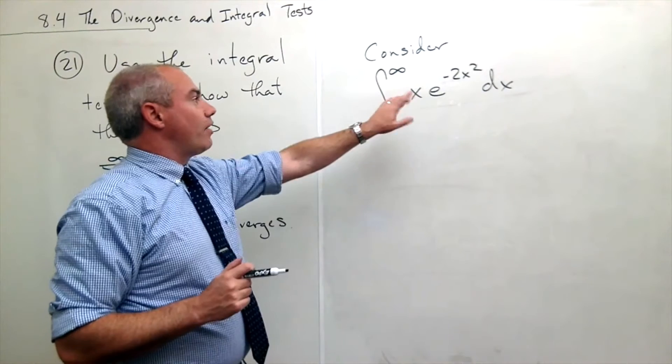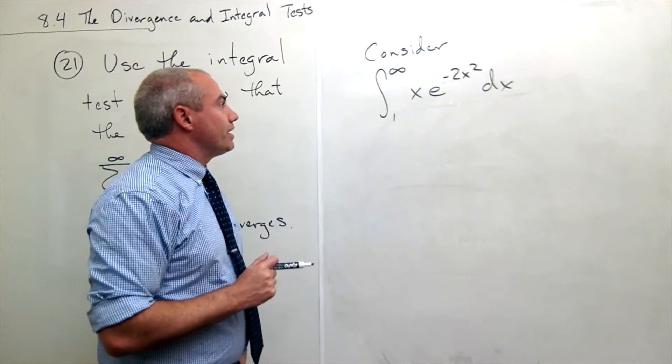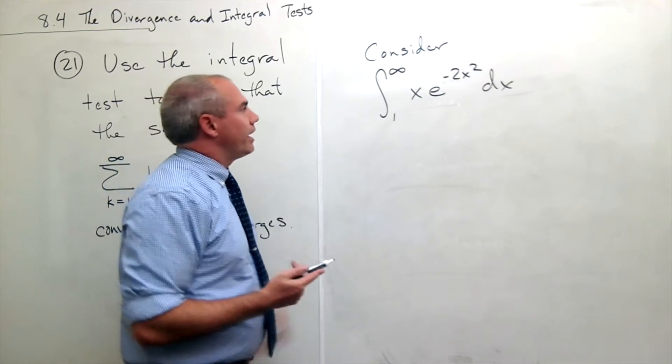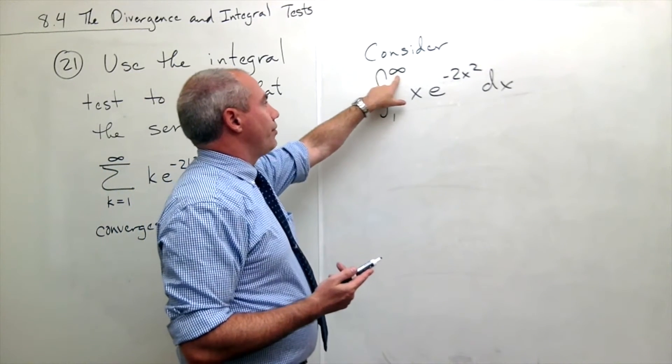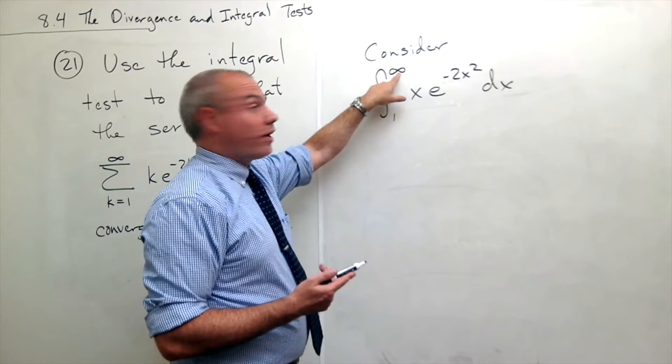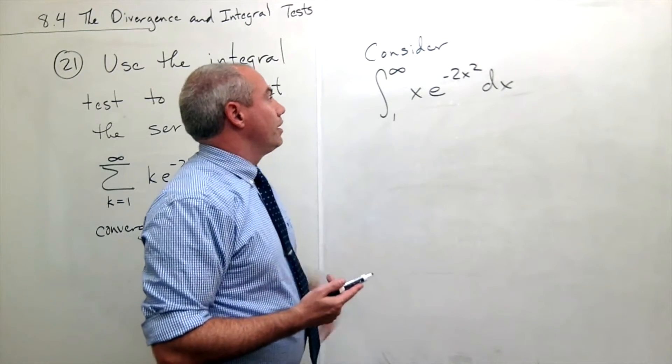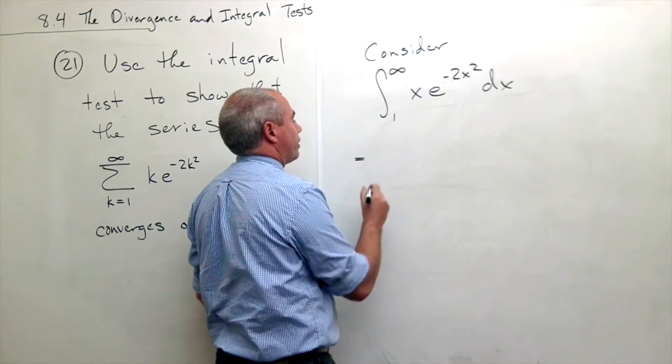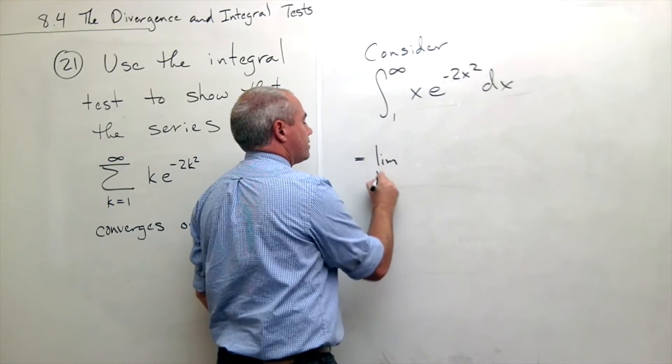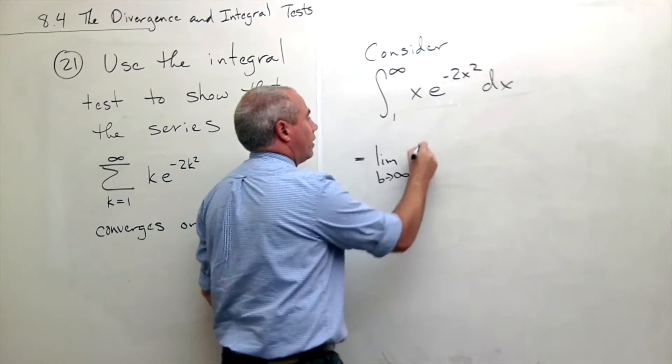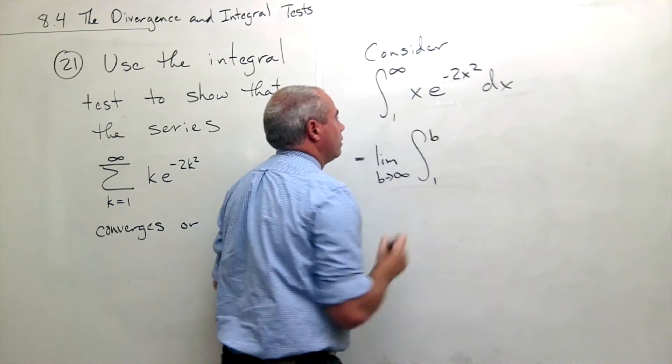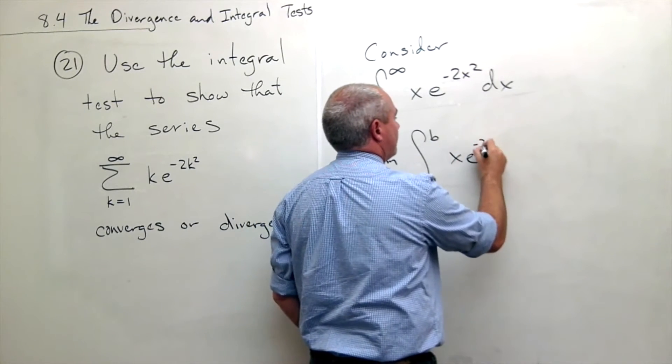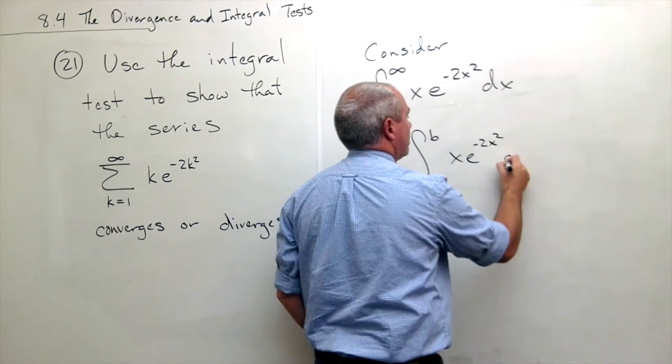I can see right now a good idea here would be to use a u substitution. And also this is an improper integral so I might want to rewrite. Okay, so first let's just rewrite this as an improper integral. This is the limit as b goes to infinity of the integral from 1 to b of x e to the negative 2x squared dx.